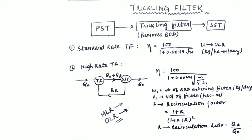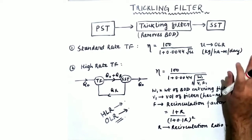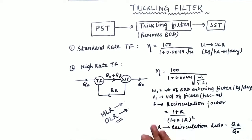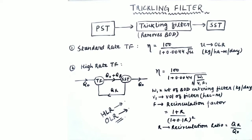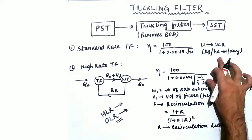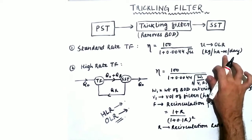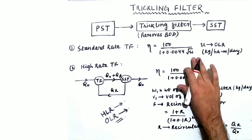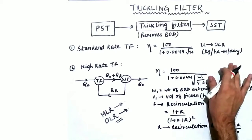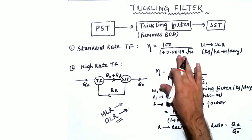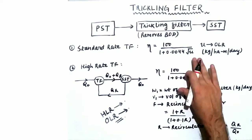The efficiency of a standard rate trickling filter can be calculated using the formula: E = 100 divided by (1 + 0.0044 × √U), where U is the organic loading rate in kilogram per hectare meter per day. If the volume is kept in meter cube instead of hectare meter, then replace 0.0044 with 0.44.